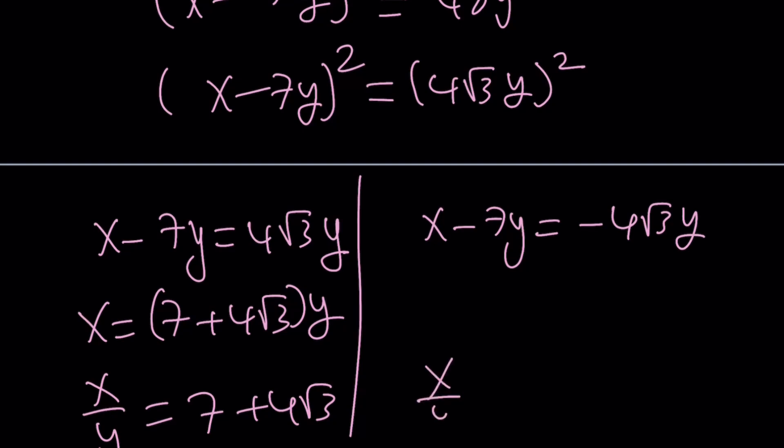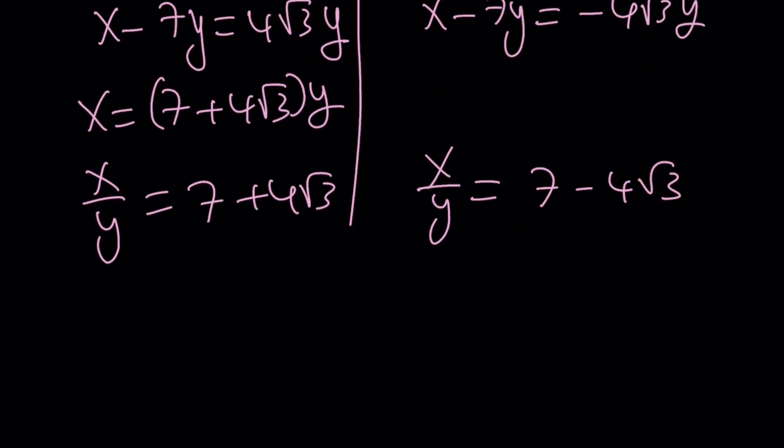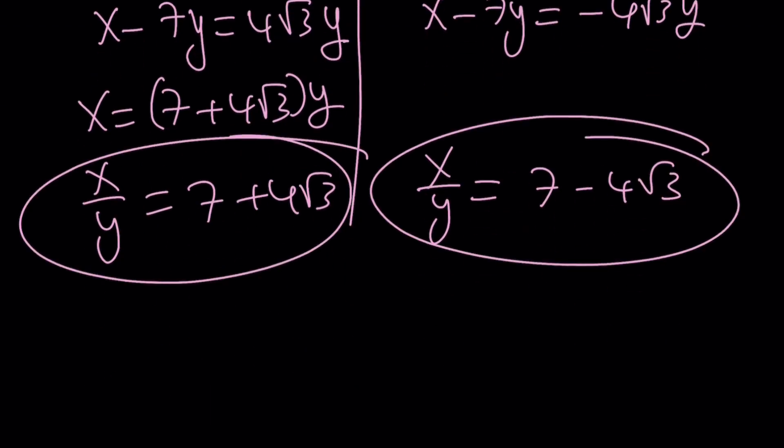And the second branch comes from the negative 4 root 3y. And of course, at the end, you're going to get something similar, right? So those are the x over y values. But remember, they both give us 14, right? Awesome.